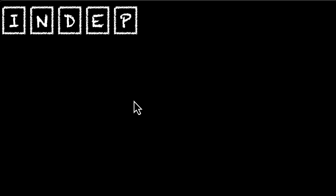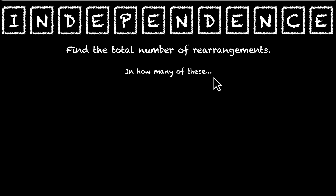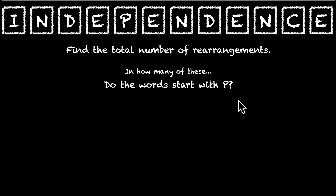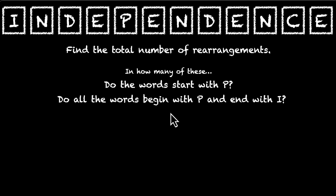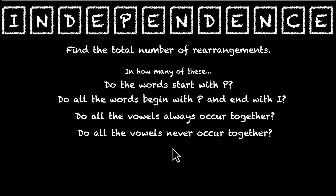Let's put to use whatever we have learned and solve this problem. We have the word INDEPENDENCE. We have letters from the word independence and we want to figure out these things: first, find the total number of rearrangements; then figure out in how many of these the words start with P; in how many they begin with P and end with I; in how many all the vowels always occur together; and in how many all the vowels never occur together.